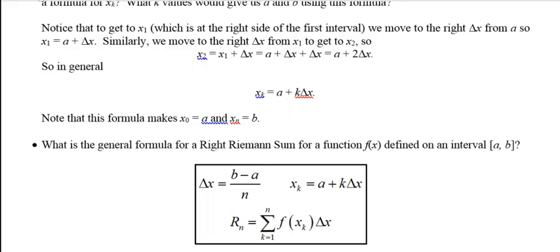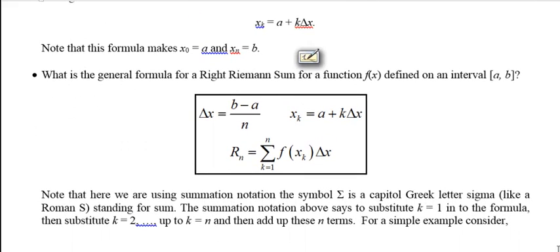And we want to do this for the k's going from 1 up to n. So here we're using a capital Greek letter sigma, which is like a Greek S, standing for sum. So it means to add them up or sum them up. So we're taking each of these products, which are areas of rectangles, and adding them up.